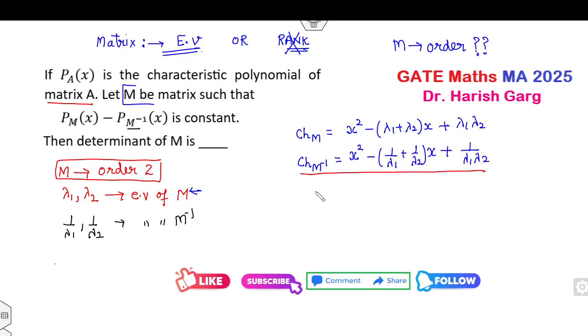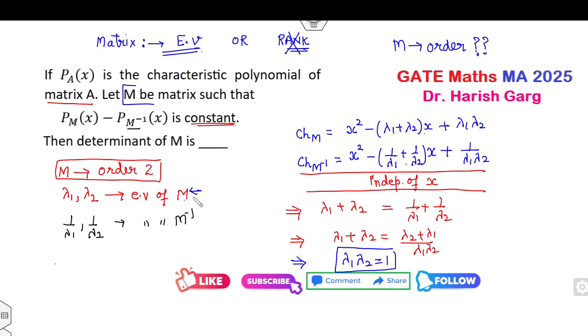Now as per the given statement, if you subtract them it must be independent, it must be constant. So when it will be constant, when it is independent of x? When the coefficient of x as well as the coefficient of x in the characteristic of M inverse both are equal. So once they are equal, that means you can solve them: it will be (λ₂ + λ₁)/product. What is the meaning of this? That will be λ₁ × λ₂ is 1. So what is the meaning of the product of the eigenvalue? That means determinant of the matrix M is 1, and that is my required answer, determinant of the eigenvalue is 1.